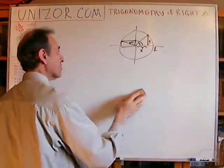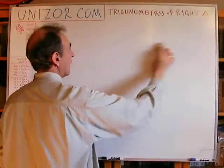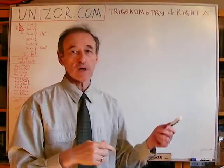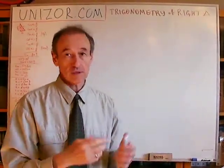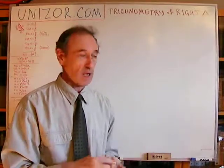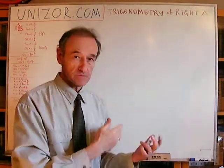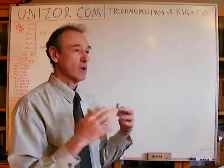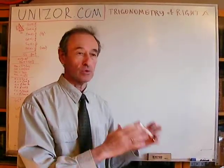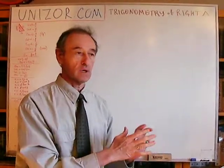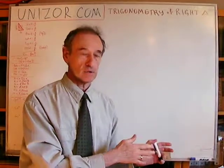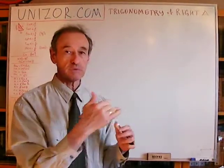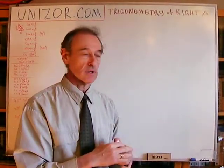Now we're back to right triangles. In that case, I can actually use both definitions, but the first one — which was defined specifically for right triangles — is obviously much more appropriate. The equivalence of these two definitions was discussed in the previous lectures. So I will go back to the original definition of trigonometric functions for right triangles, as the ratio between the cathetus and hypotenuse, and cathetus between themselves.